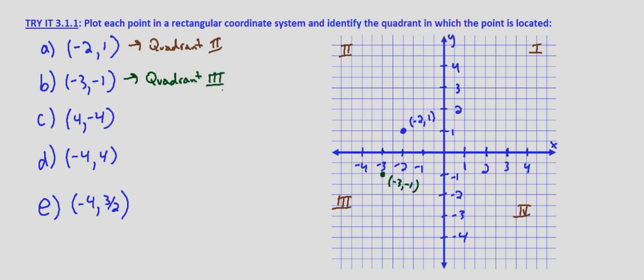Next, 4, negative 4. Our x is positive, our y is negative, so we're going to go to the right and down — 4 units to the right and 4 units down. This point right here is 4, negative 4. Anytime we have a positive x value and a negative y value, we're going to end up in the fourth quadrant.